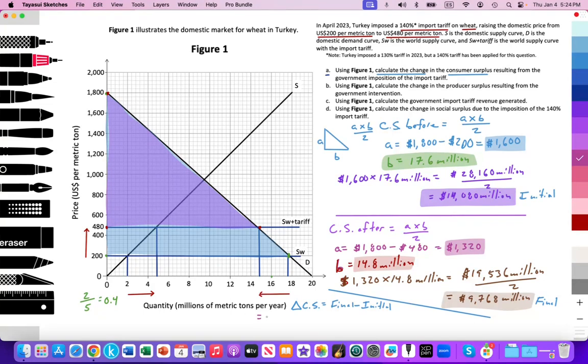The final value is 9,768 million minus the initial of 14,080 million. That final answer is now negative. Consumer surplus has been reduced by 4,312 million or 4.312 billion. There's our final answer.